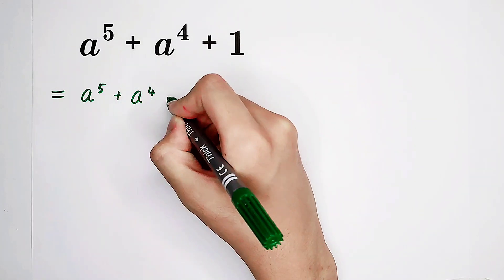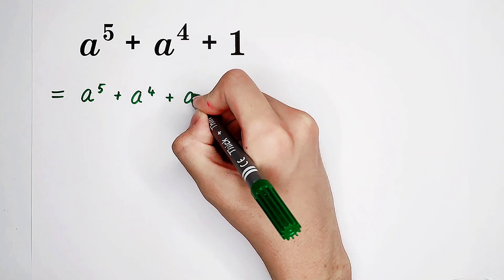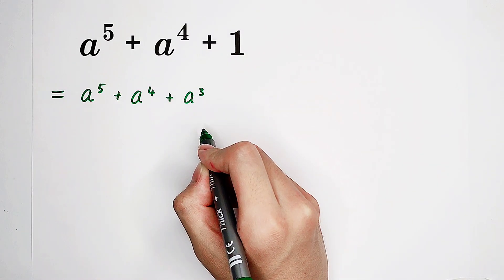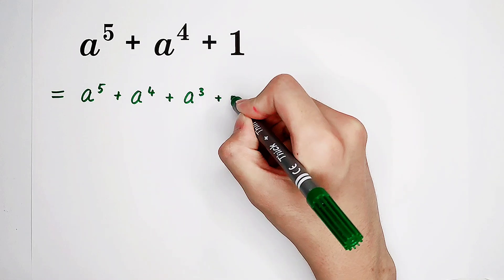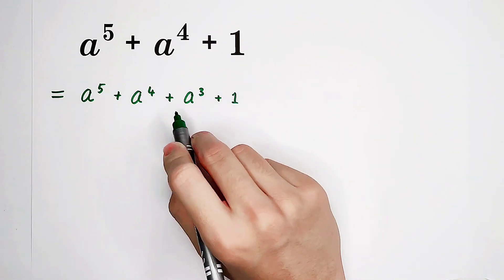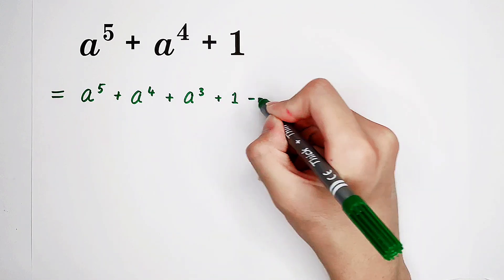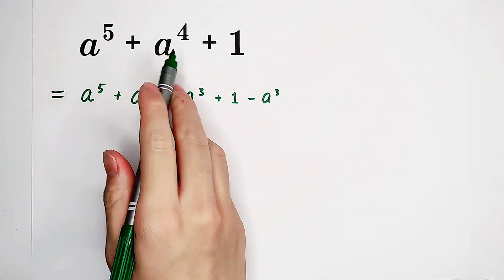What we can do is to add an a to the power of 3 here. Because you've added it, so you have to subtract it again. And they are equal.